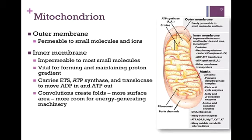This is vital for forming and maintaining the proton gradient that we will accomplish in the process of electron transport. The membrane also carries the components of the electron transport system, as well as the ATP synthase that generates ATP, and the translocase that moves ADP into the matrix and ATP out. In other words, these are all membrane-bound components. The inner membrane contains many convolutions, creating multiple folds — that means more surface area, more membrane space, more room in which to incorporate our energy-generating machinery.